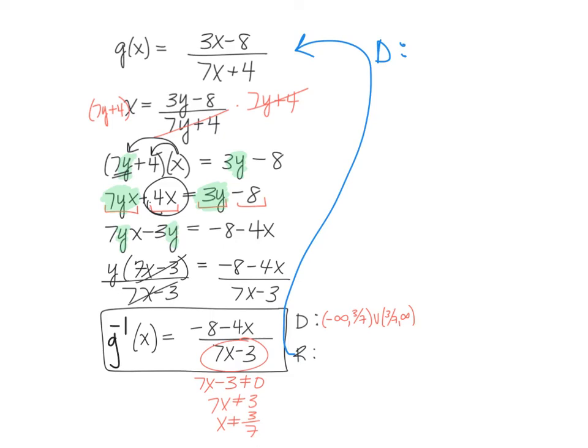So we're trying to find the range of the inverse, which will be the same as the domain of the original, and if I look at the original function, it is also a fraction, so we have the same restriction that the denominator cannot equal 0. So we'll set 7x plus 4 equal to 0 and solve.